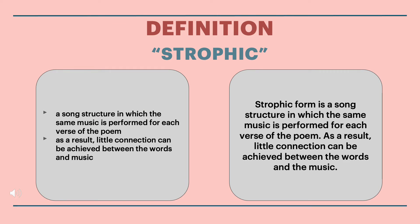First, there's some basic song terminology that we have to learn. First up is strophic. Strophic form is a song structure in which the same music is performed for each verse of the poem. As a result, little connection can be achieved between the words and the music. So imagine you have a really long poem and each verse evokes a different feeling — childhood, young romance, aging, death — and each verse is set to the melody of Twinkle Twinkle Little Star over and over. That would be strophic form.